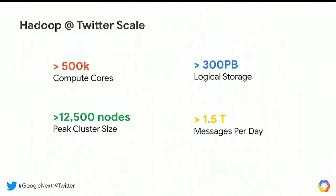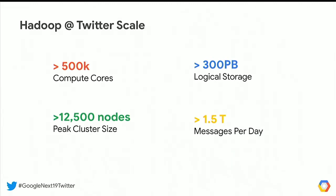Let's talk about Hadoop as it runs at Twitter on-prem at scale right now. These are pretty massive numbers: 500,000 cores, more than 10,000 node clusters. Can you talk a bit about the challenges involved with running Hadoop at this scale?